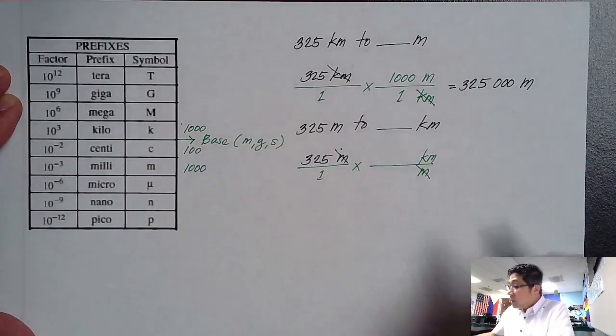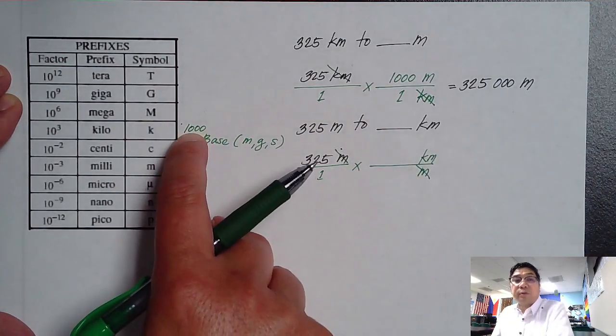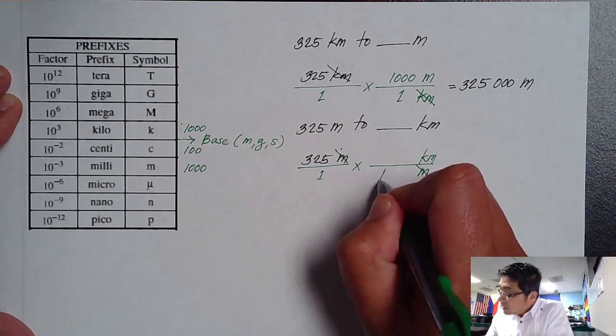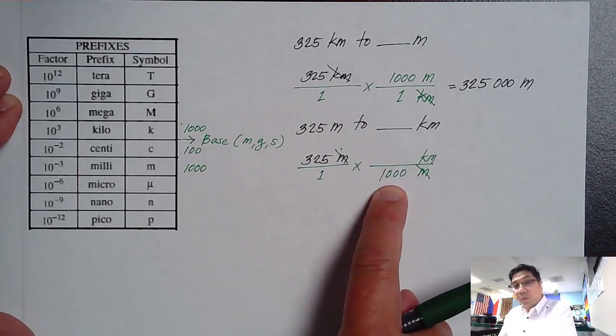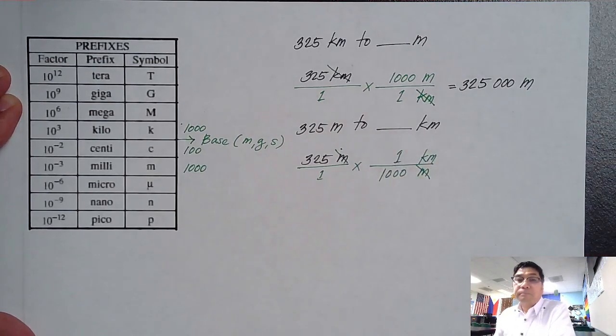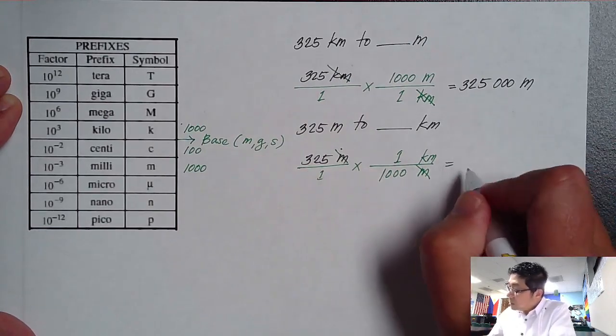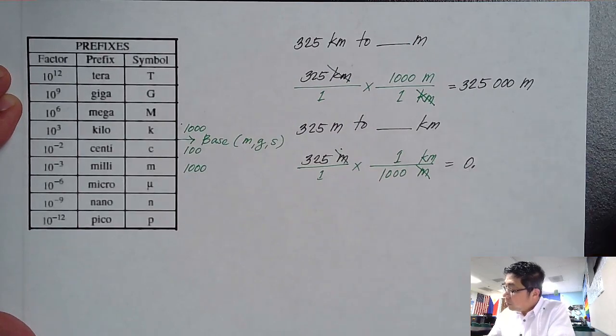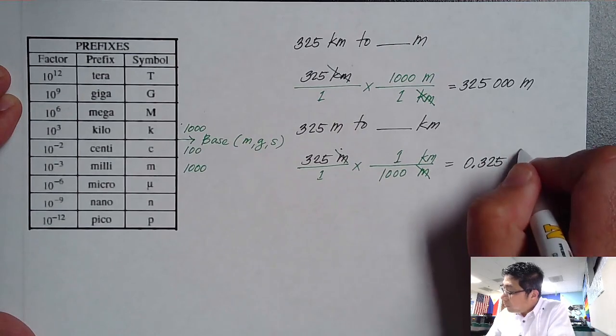So if it's going upward, we have to use that conversion factor of 1,000 and place this at the bottom. So we have to divide this by 1,000, and then 1 should go on the top. So now as I simplify this, 325 divided by 1,000 will give us an answer which is equivalent to 0.325 kilometers.